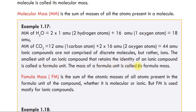The mass of the formula unit is called formula mass. Formula mass is the sum of the atomic masses of all the atoms present in the formula unit of a compound, whether it is molecular or ionic. However, formula mass is used mostly for ionic compounds.